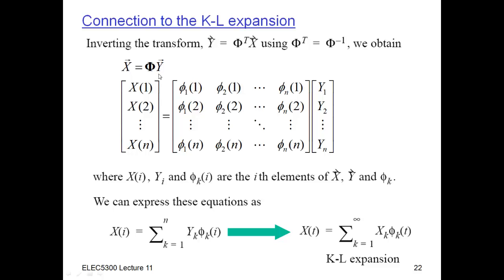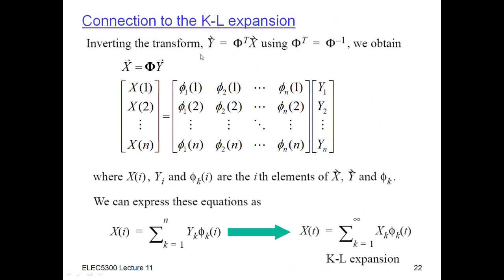We have the linear transformation Y = Φ transpose · X giving uncorrelated random variables. Inverting this — since Φ transpose equals the inverse of Φ — if we multiply on the left and right by Φ, we isolate X, giving X equals Φ times Y. We can list this out: X is just the vector from X(1) to X(n).